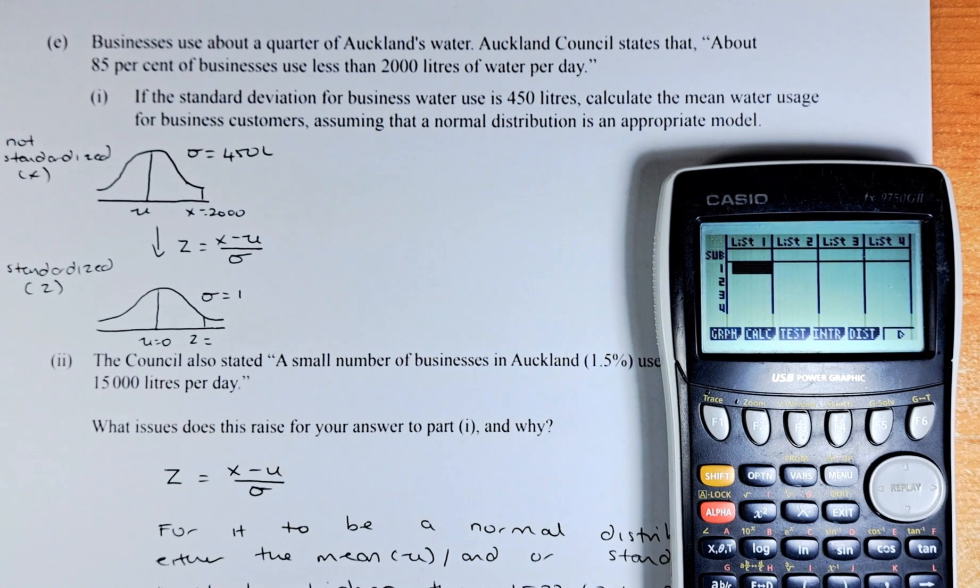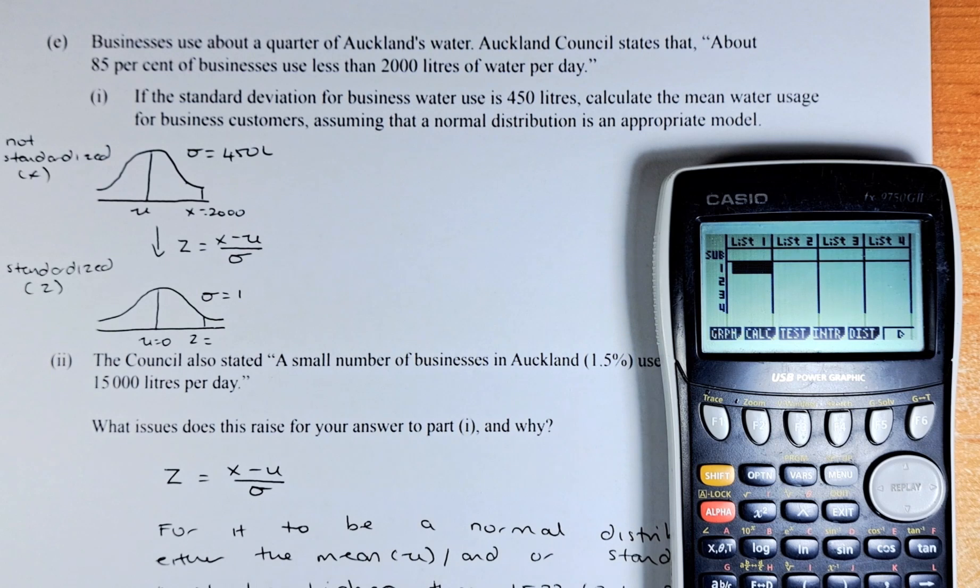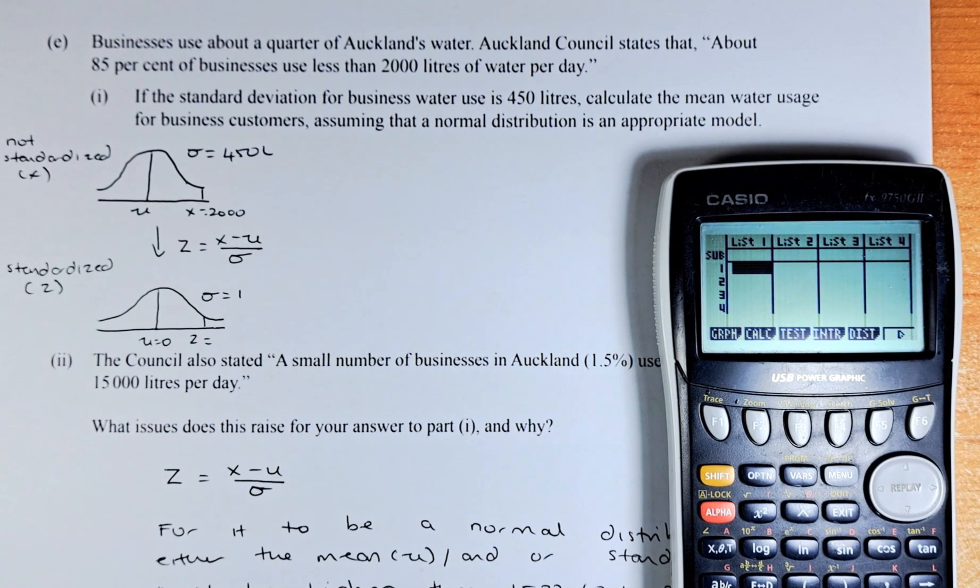Question E, part 1 and part 2 are both excellence questions. The business uses about a quarter of Auckland's water. Auckland Council states that about 85% of businesses use less than 2,000 litres of water per day.